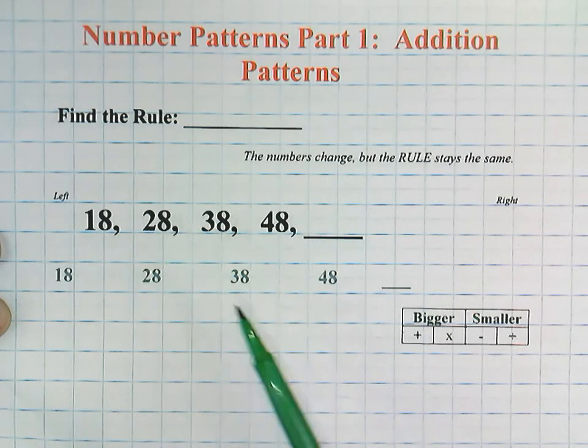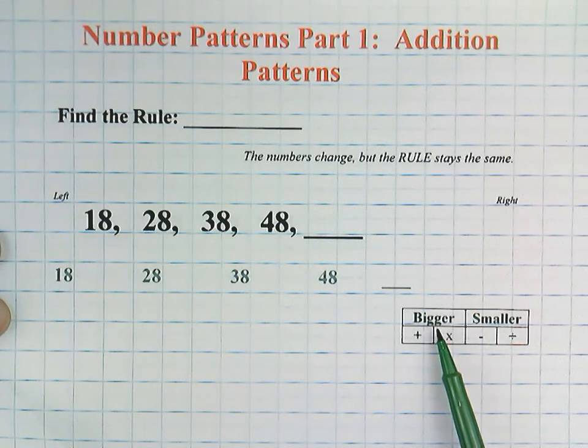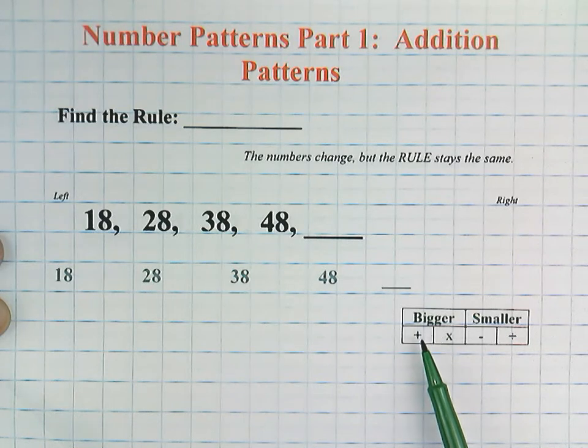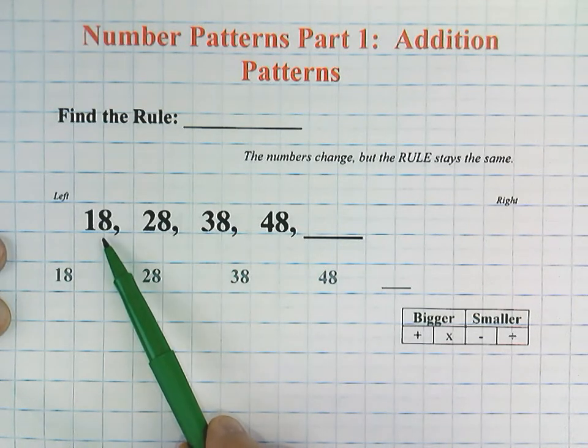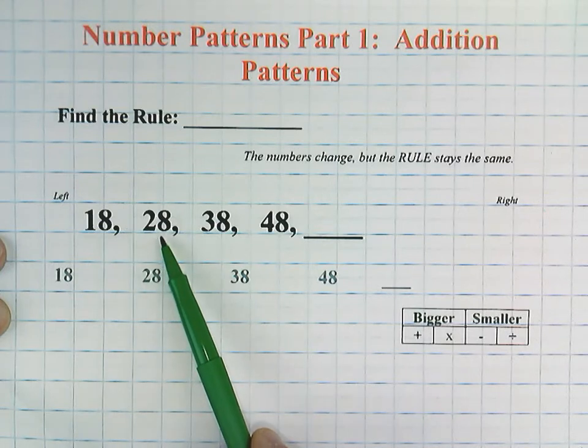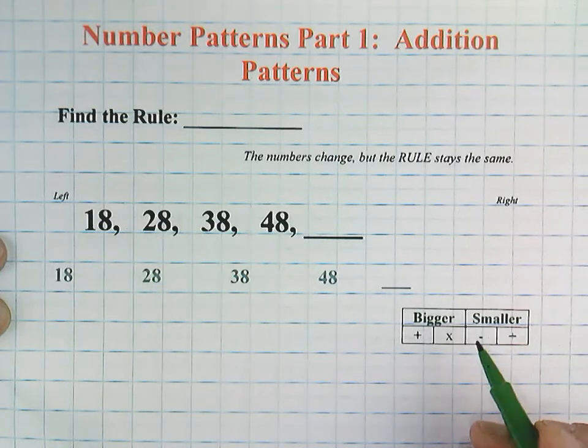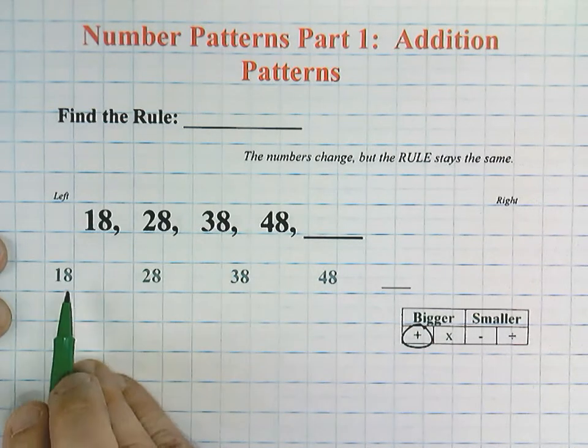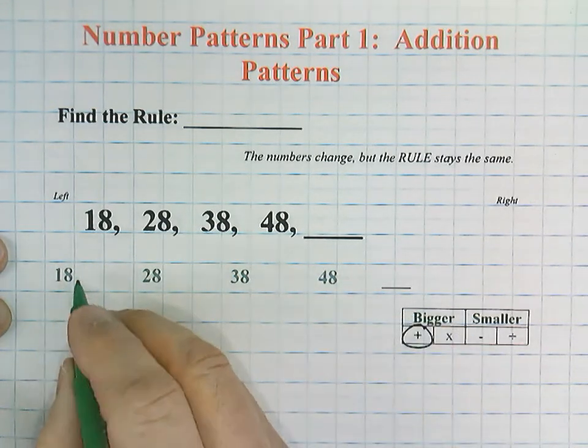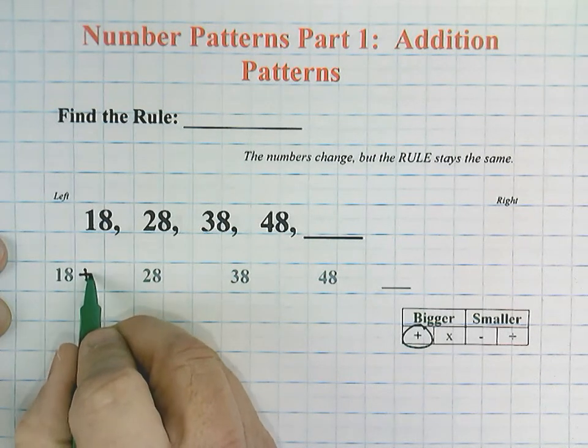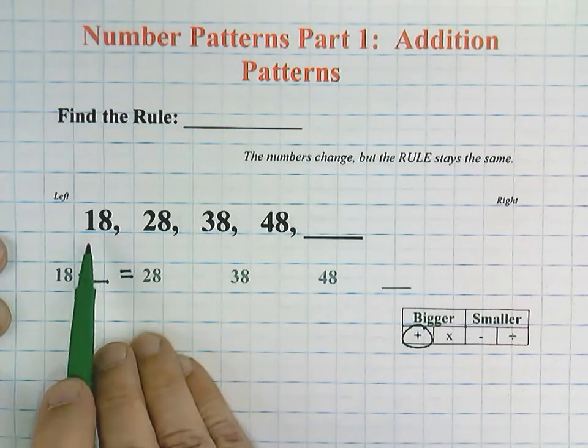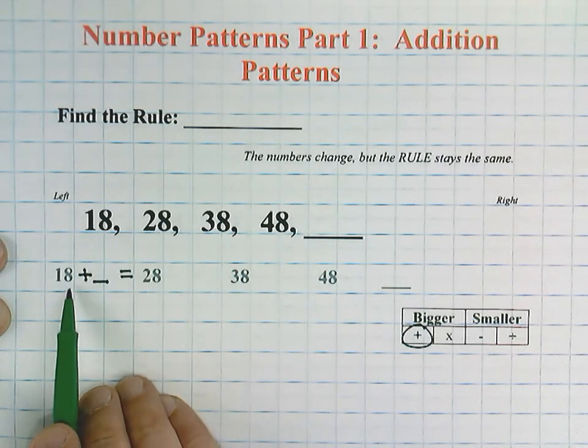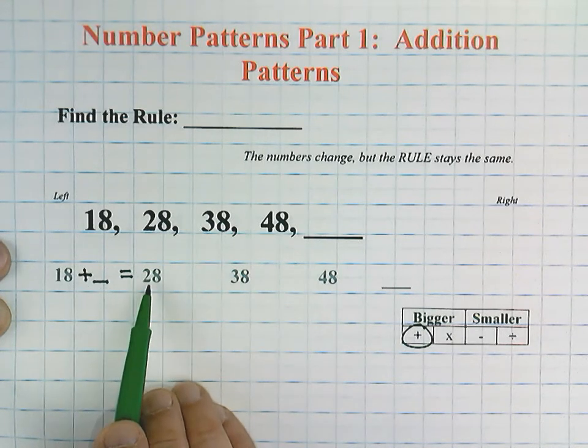18 to 28, the numbers are getting bigger, which means this is either an addition pattern or a multiplication pattern. It's not multiplication because 18 times any number is not going to equal 28. So we've narrowed this down to addition. I'm going to write the rule: 18 plus blank equals 28.